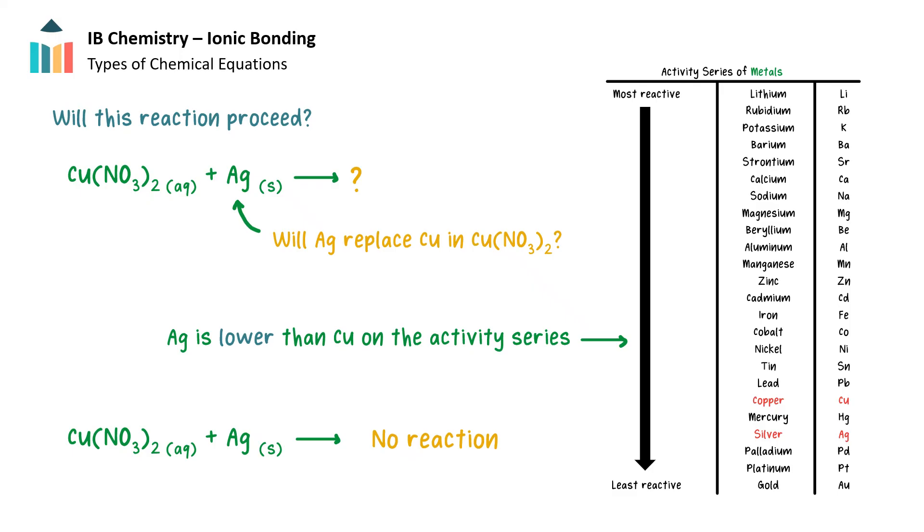In contrast, a single replacement reaction involving a copper nitrate solution with silver metal would not proceed, with no chemical change observed. Referring to the reactivity series, silver metal lies below copper and is less reactive. Silver is less likely to lose electrons to form a metallic cation than copper is. Silver will remain in its elemental state and no reaction will occur.